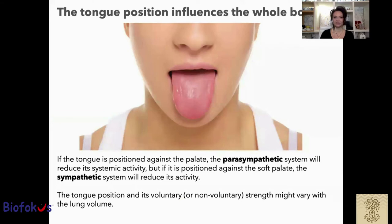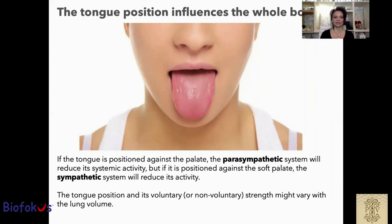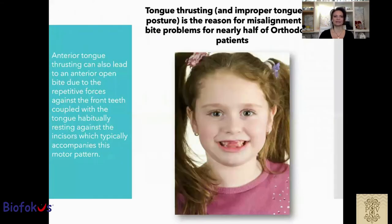If the tongue is positioned against the hard palate, the parasympathetic system will reduce its systemic activity. But if it is positioned against the soft palate, the sympathetic system will reduce its activity. The tongue position and its voluntary or non-voluntary strength might vary with tongue volume. So the tongue position influences the whole body.